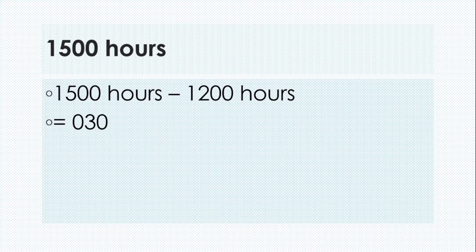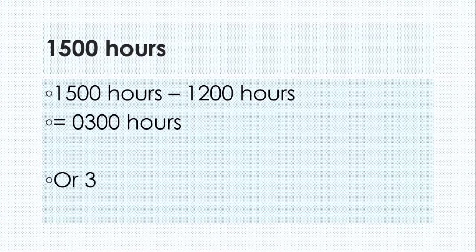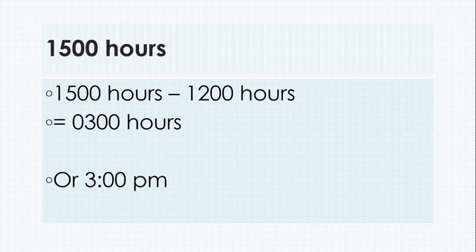Next example: convert 1500 hours into 12 hour clock time. Since it is more than 1200 hours, we have to subtract 12 hours from it. So 1500 hours minus 1200 hours is equal to 0300 hours. That means 3 PM. Because it is more than 1200 hours, the time will be after 12 noon.